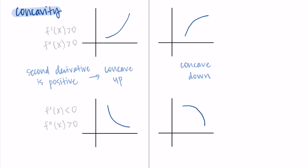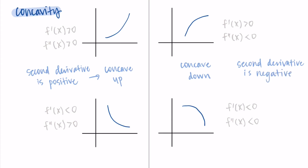For the concave down graphs, the top one has a positive first derivative since it's increasing, and the bottom has a negative first derivative since it's decreasing. But what they have in common is that the second derivative is negative on both. When you have a concave down portion of a function, the second derivative is negative — the slopes are decreasing, becoming less positive over time. So what to remember is: concave down means a negative second derivative, concave up means a positive second derivative. Knowing this is the main tool we need to answer questions about concavity.